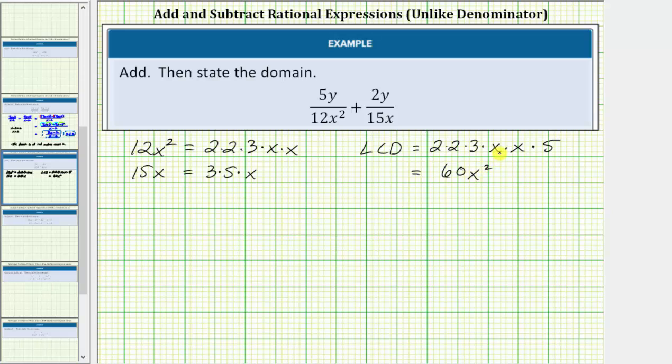So the next step, we'll write both fractions as equivalent fractions with a denominator of 60x squared. So to begin, we have 5y divided by 12x squared plus 2y divided by 15x. Looking at the first fraction, to write an equivalent fraction with a denominator of 60x squared, we need to multiply the numerator and denominator by 5 because 12x squared times 5 is 60x squared.